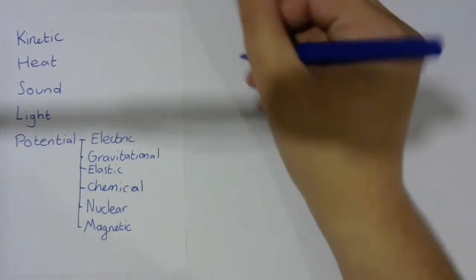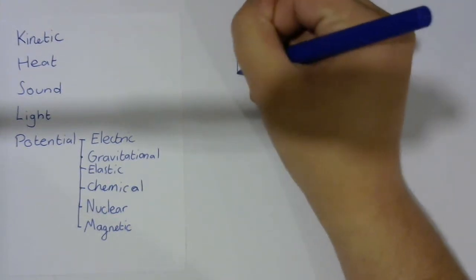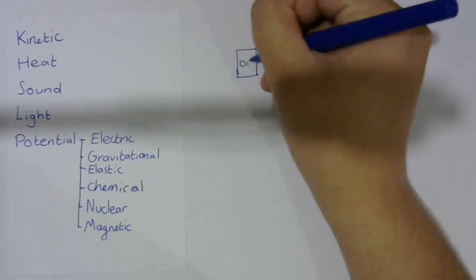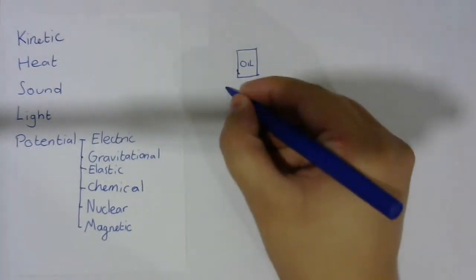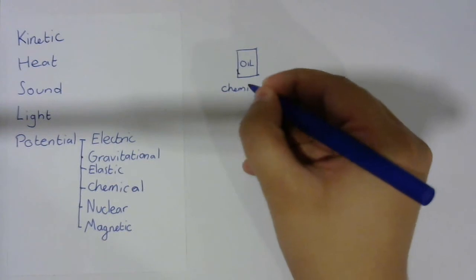Let's start with our barrels of oil and our coals, etc. These all have chemical energy.